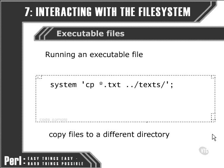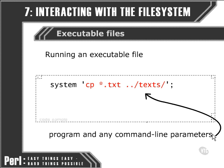The cp program is accessible from the file system path. If it wasn't accessible from the path, we'd have to specify an absolute address for it, unless it was in the same directory as our Perl script was running. You'll notice that we're not just calling the cp program on its own; we're also feeding it some command line parameters by telling it which kind of files we want to copy and where we want them to go.